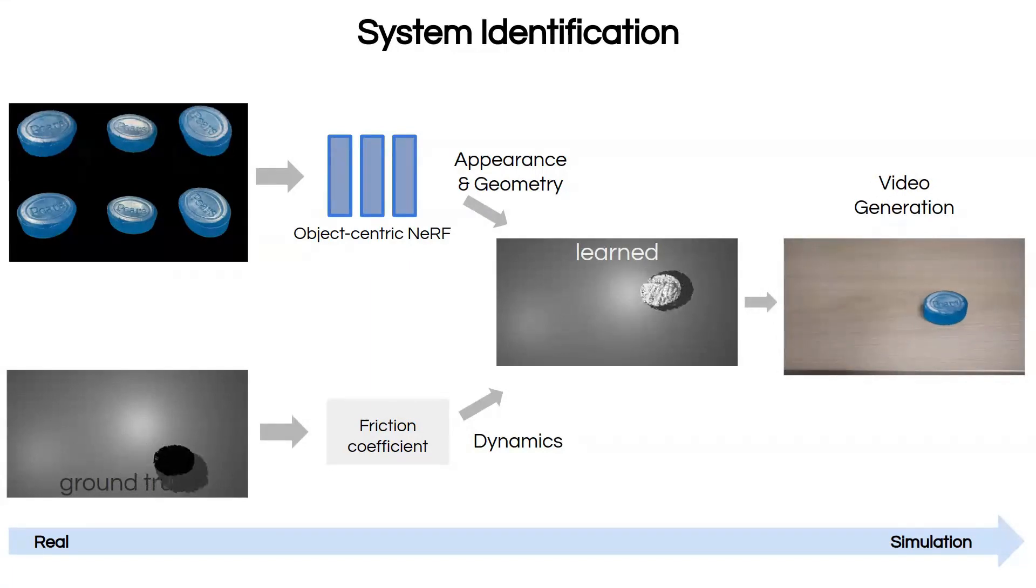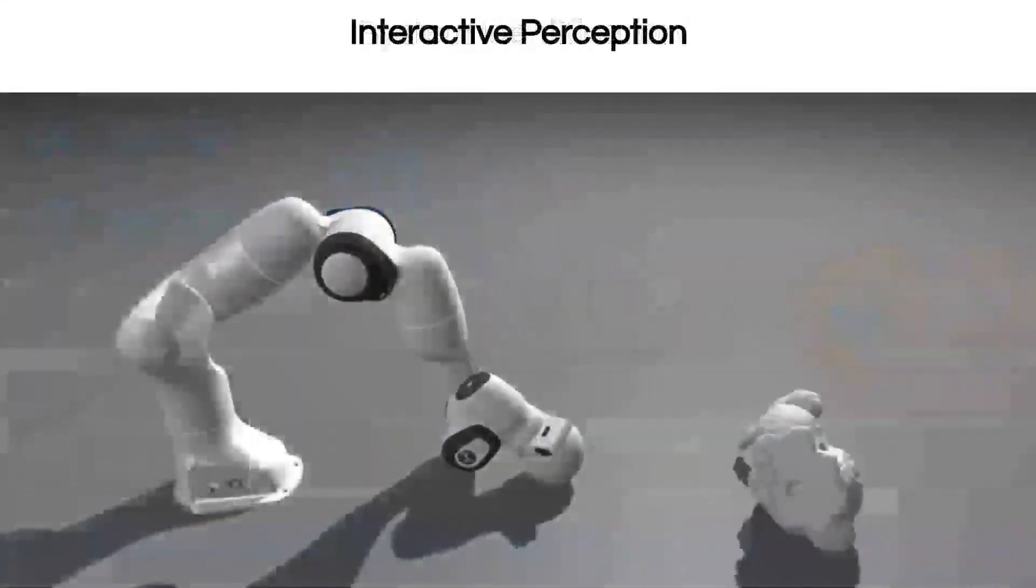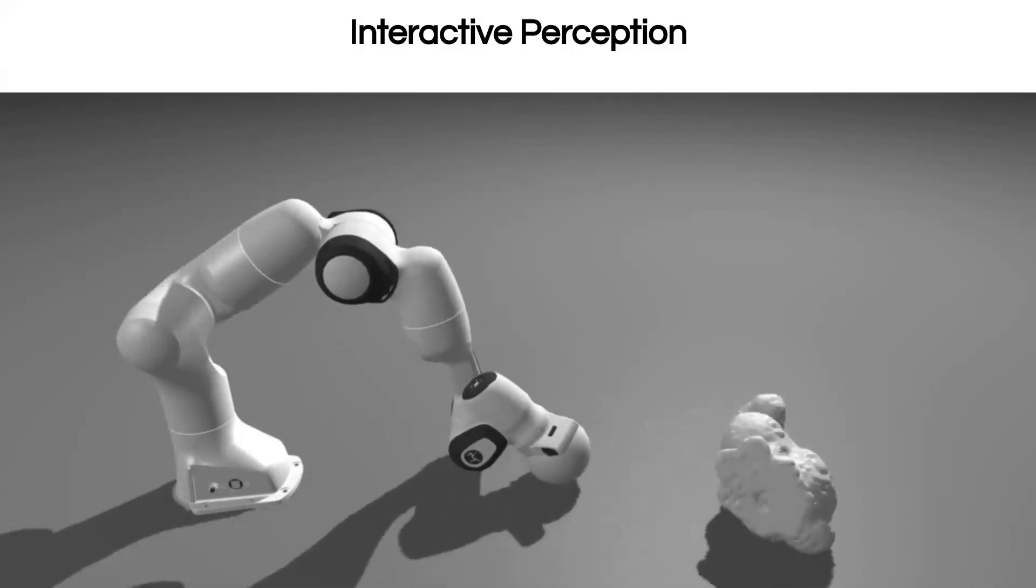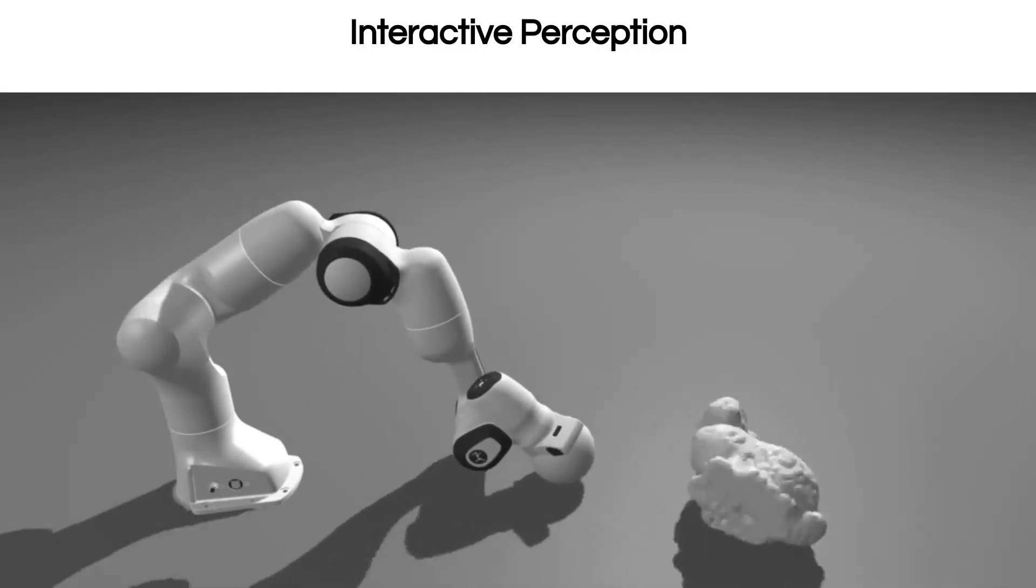In this experiment, we learn the mass, inertia scaling, and sliding friction coefficient of the bunny through interactive perception. We use a spherical end effector to push a neural object. This interaction facilitates identification of dynamics parameters such as mass.